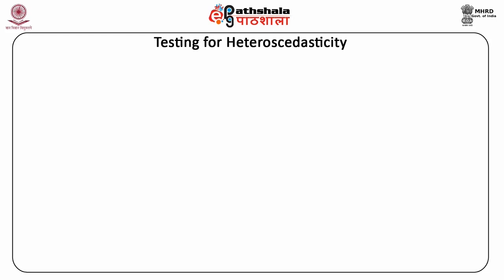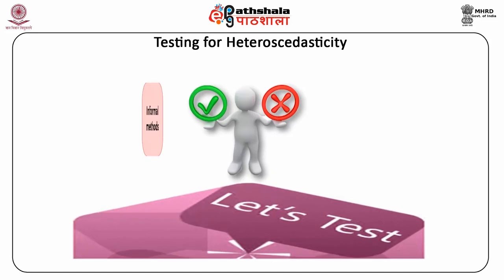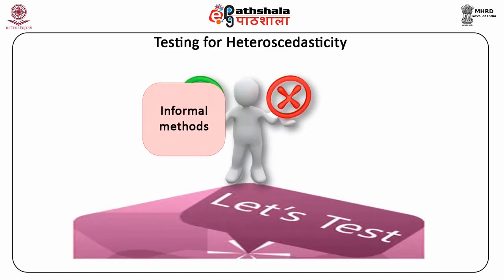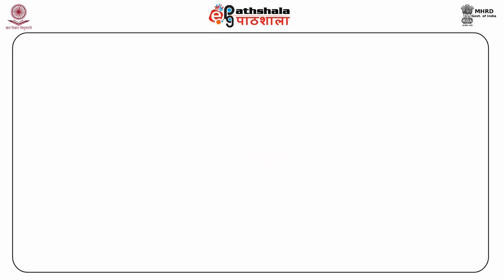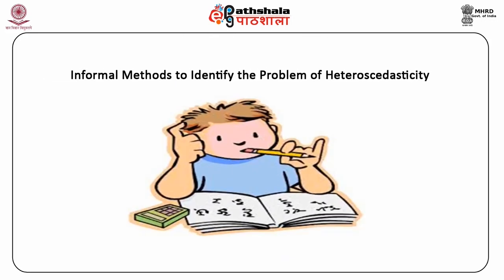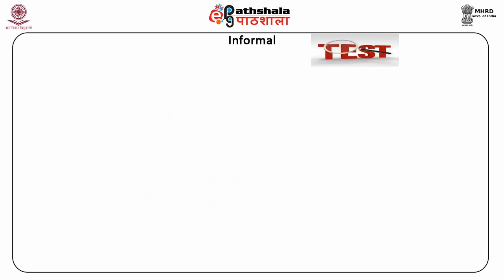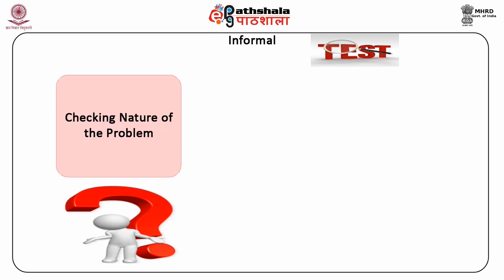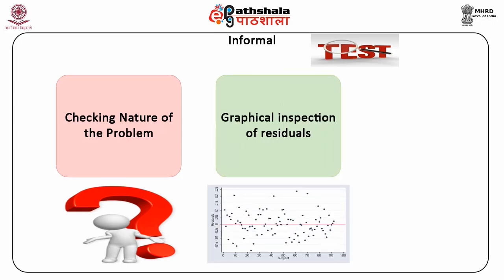So there are two ways in general to check for the presence of heteroscedasticity. The first is the informal way, which is done through graphs, and therefore we call it the graphical method. The second is through the formal tests for the heteroscedasticity problem. The informal methods to identify the problem are of two types: checking the nature of the problem, and graphical inspection of residuals.